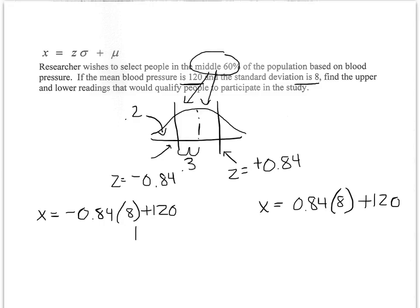And I'm going to end up with 113.27 and 126.72. Since blood pressure has to be a whole number, I want the middle 60 percent. It's going to go from 113 to 127. This isn't quite as clear with the rounding in this case. It's not a huge deal on this one. This would be the middle 60 percent would have a blood pressure between 113 and 127.